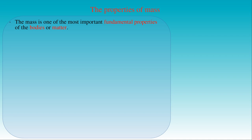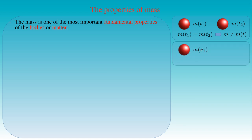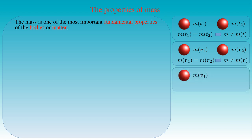After having introduced the SI unit of mass, we give a brief overview of the basic properties of mass. Mass is one of the most important fundamental properties of bodies or matter. If we measure the mass of a body at a given instance of time T1 and again at time T2, we find that the masses measured at different instances are the same — the mass of a body does not depend on time. If we measure the mass at different positions in space, described by position vectors R1 and R2, the masses are still the same — mass does not depend on space. The mass of a body also does not depend on its velocity or state of motion, and does not depend on any force acting on the body.